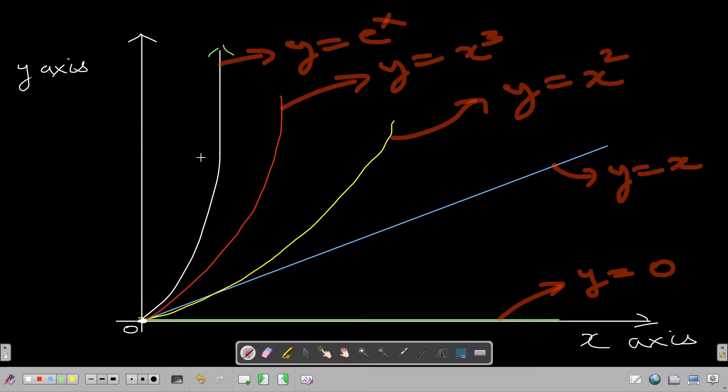So what you can notice? If I draw a vertical line on the y axis, it would intersect e raised to power x first, then it would intersect x cube, then x square, then x, then zero. So actually, this is the order of their relative time complexities. E raised to power x is worse than x cube, x square is worse than x is worse than zero. So time complexity of O of 1 is best, the constant time complexity, then quadratic, then cubic, then exponential time complexity.